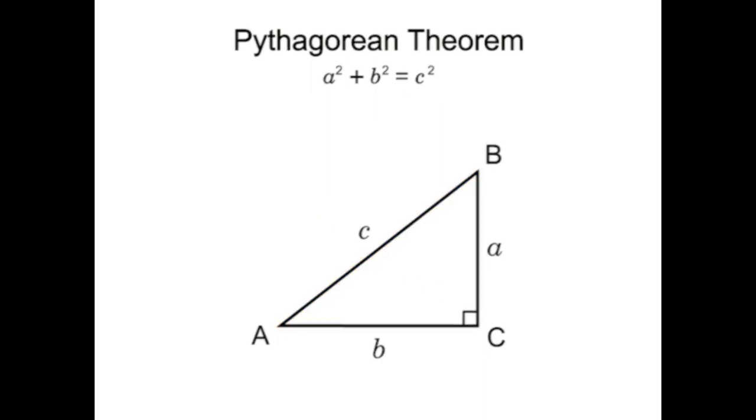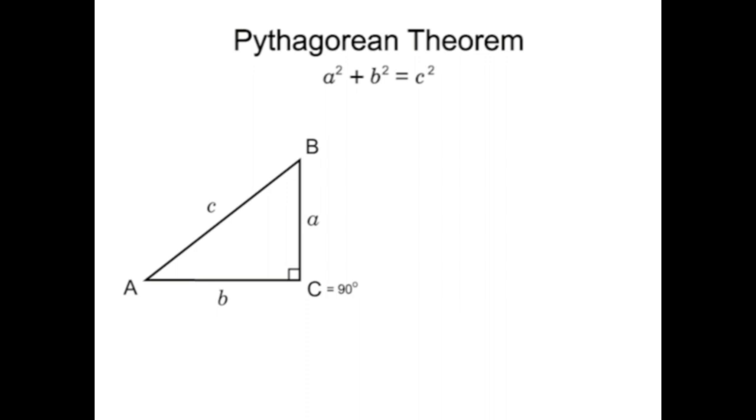When a triangle has one side that is equal to 90 degrees, it's called a right triangle, and the Pythagorean Theorem can be applied. For example, to solve for C, simply take the square root of both sides. This leaves the equation C equals the square root of A squared plus B squared.